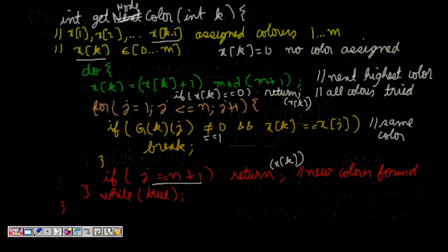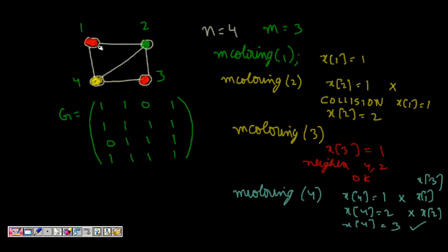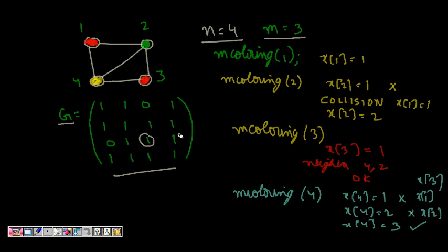Let's trace through an example: a graph with four nodes, n=4 and m=3. Representing it as an adjacency matrix — for instance, G[3][3] is 1 because node 3 is connected to itself in this context, G[3][4] is 1 since node 3 is connected to node 4, and G[3][1] is 0. We then call m_coloring(1) to start.